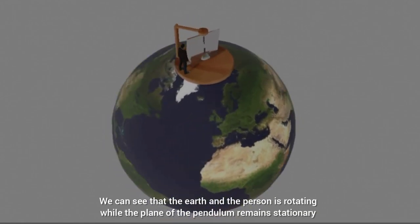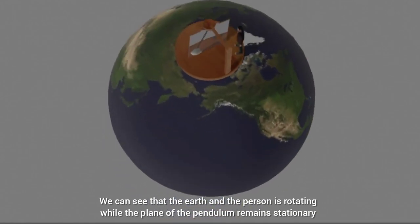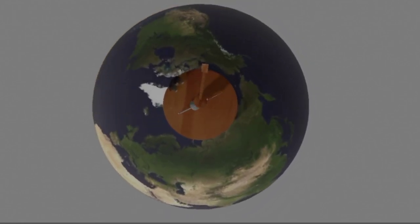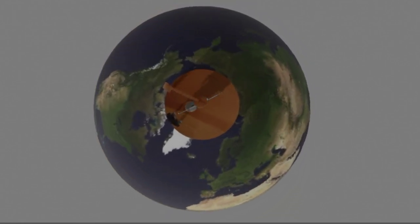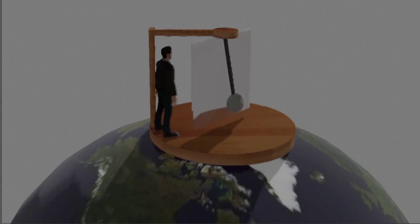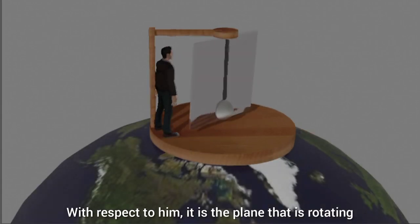We can see that the Earth and the person are rotating while the plane of the pendulum remains stationary. But the person will see something different. With respect to him, it is the plane that is rotating.